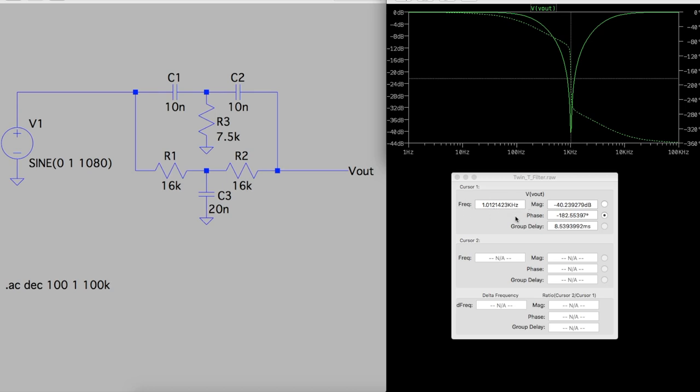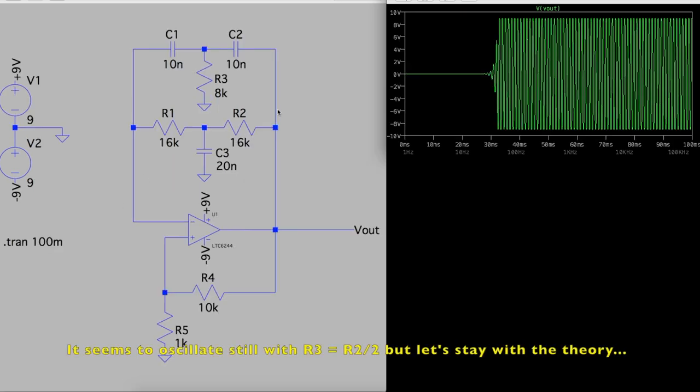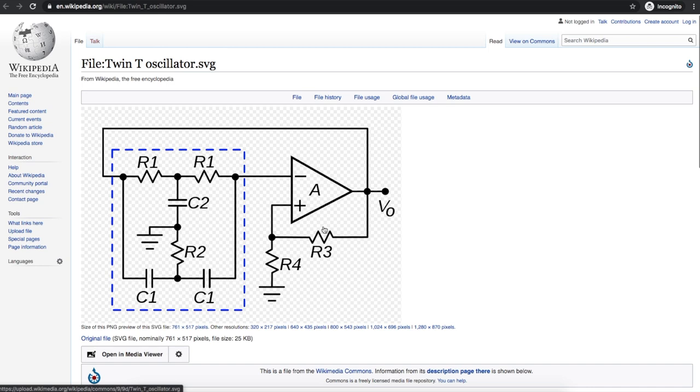And now I've built the actual op-amp oscillator circuit with the twin-T filter in the feedback loop. I have a split plus and minus 9 volt power supply on an op-amp. And this extra right here, I needed this to kick it into oscillation.